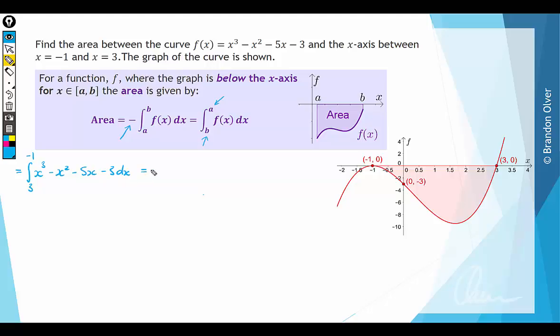Which means we can evaluate that by finding the anti-derivative. So we're going to have x to the power of 4 divided by 4, minus x to the power of 3 divided by 3, minus 5x squared over 2, minus 3x.